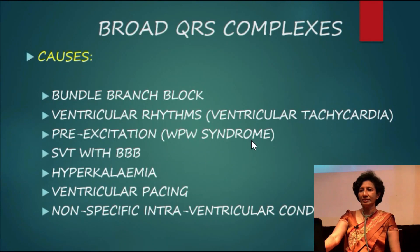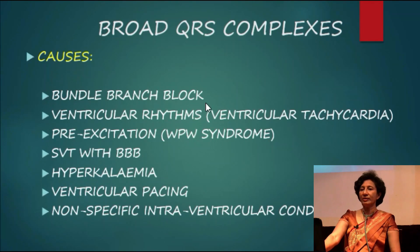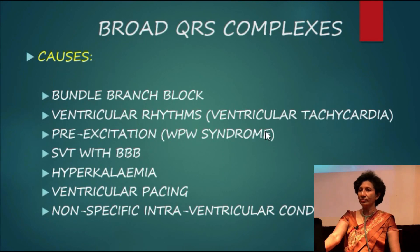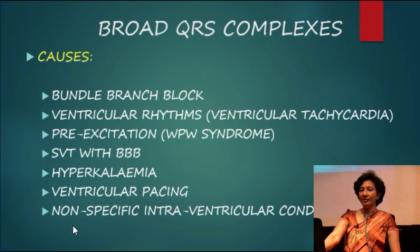Let us discuss causes of broad QRS complexes. The causes include: bundle branch block; ventricular rhythms — either ventricular ectopics, slow ventricular rhythms, or ventricular tachycardia; pre-excitation as seen in Wolff-Parkinson-White syndrome; SVT with bundle branch block; hyperkalemia; ventricular pacing; and non-specific intraventricular conduction block, which can also present as broad QRS complexes.